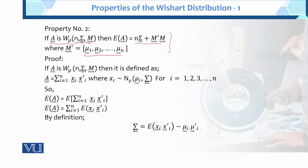If A is Wishart with these parameters, it is defined as A equals the sum from i=1 to n of Xi Xi', where Xi follows a normal distribution with mean mu_i and covariance matrix sigma. Taking expectation on both sides, the expected value applied inside the bracket gives us the expected value of Xi Xi'.